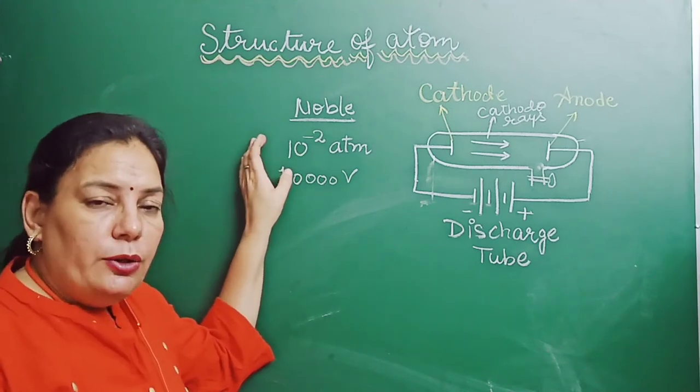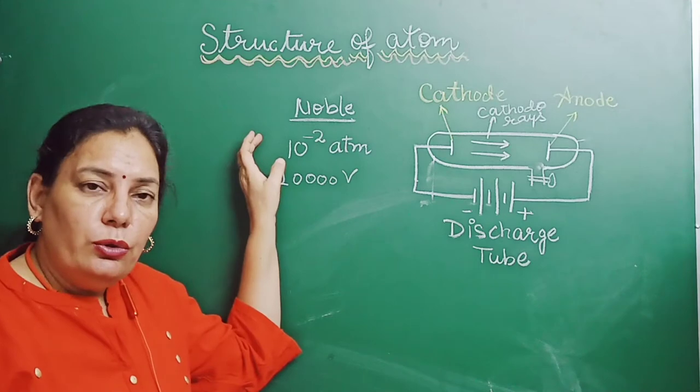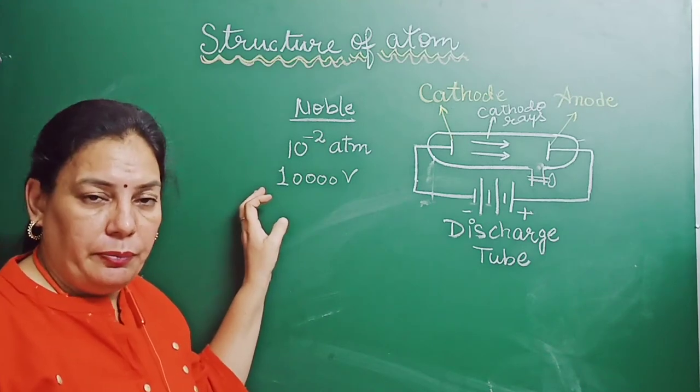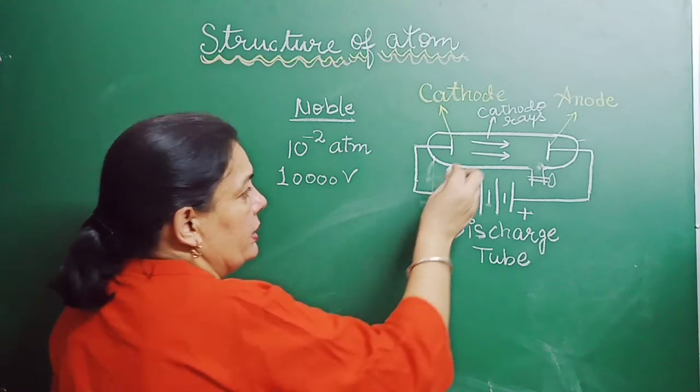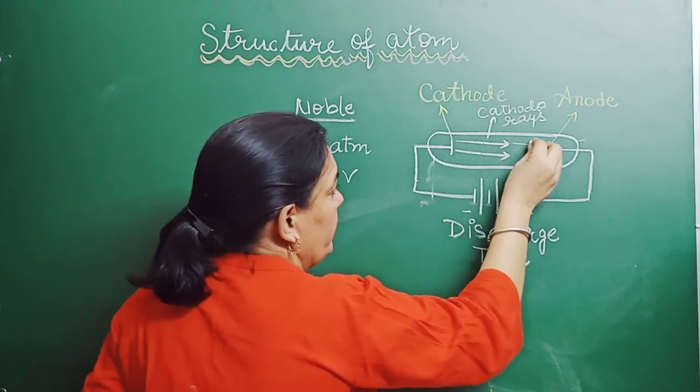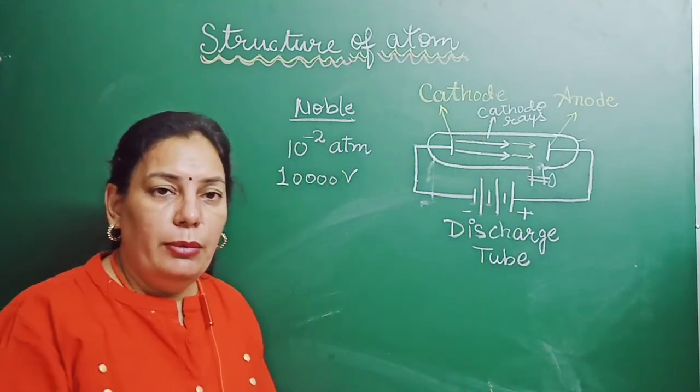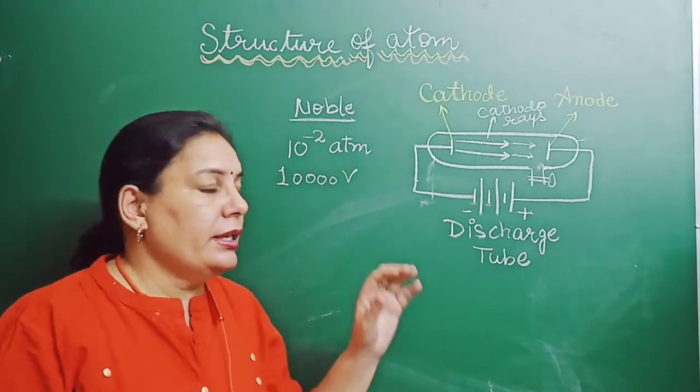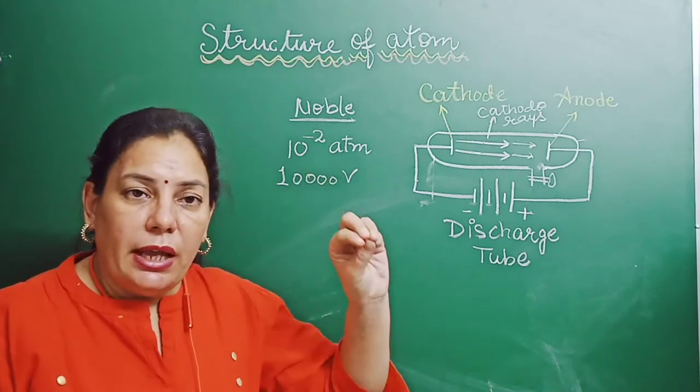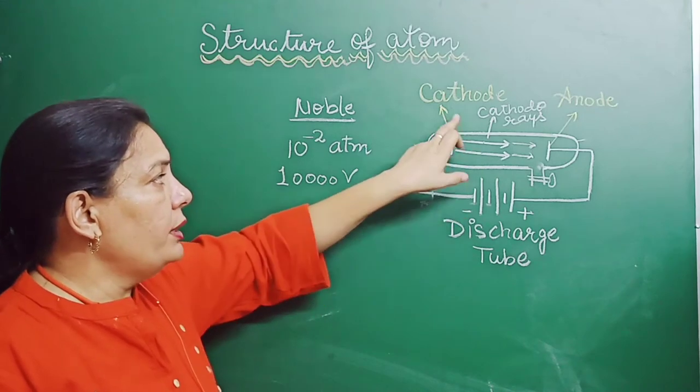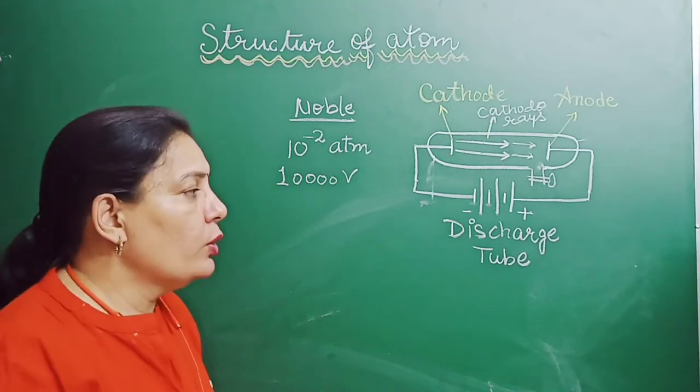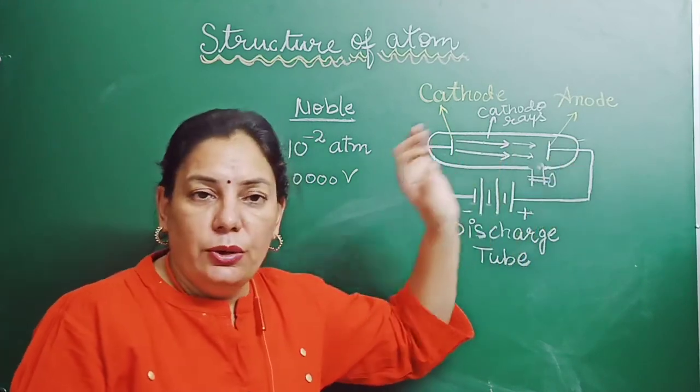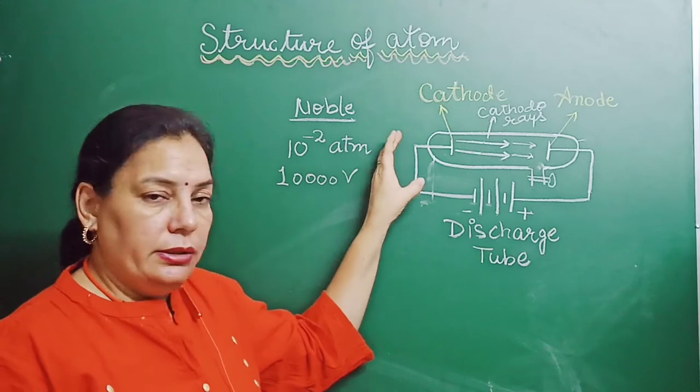Inside the discharge tube, Plucker filled a noble gas at atmospheric pressure of 10 to the power minus 2, then connected these two electrodes with 10,000 voltage battery. According to Plucker, when electric current is allowed to pass through gas filled in discharge tube at very low pressure and high voltage, some rays arise from cathode and move towards the anode. He named these rays cathode rays because they rise from the negative terminal of the battery and move towards the positive terminal.